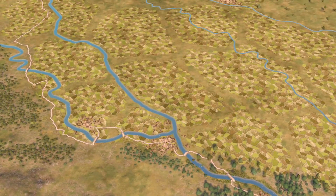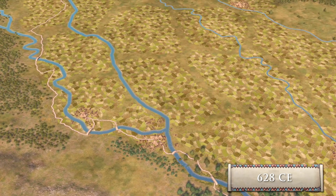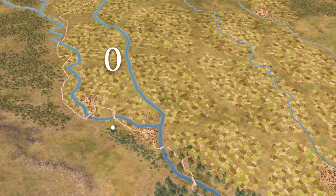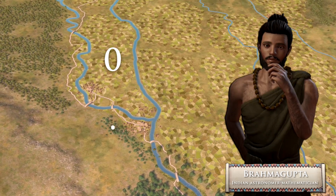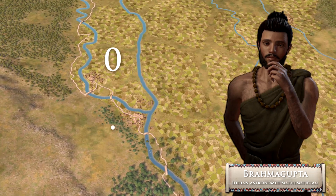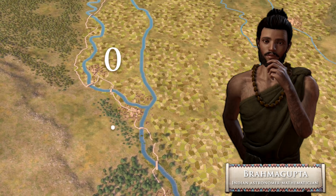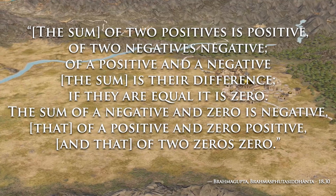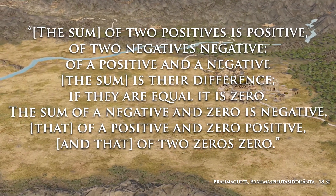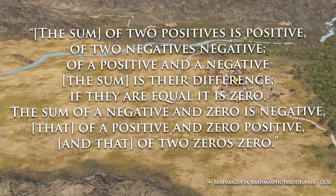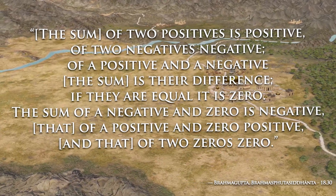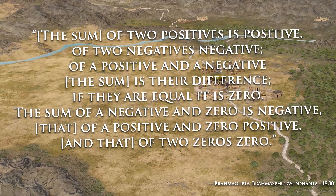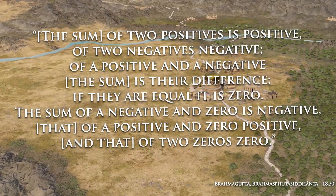Another significant change happened later, in 628 CE, with the addition of the glyph 0 by the Indian astronomer-mathematician Brahmagupta, which would replace the said void. This would be the first time in history where 0 would be defined and treated as a number in its own right. The sum of two positives is positive; of two negatives, negative; of a positive and negative, the sum is their difference; if they are equal, it is 0. The sum of the negative and 0 is negative, that of the positive and 0 positive, and that of two zeros, 0.